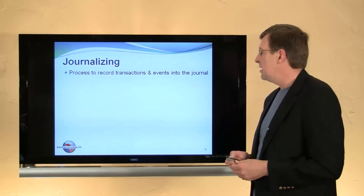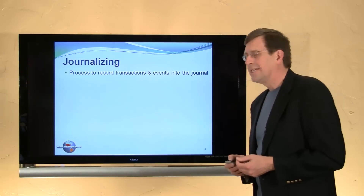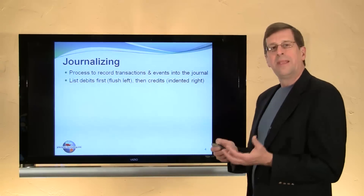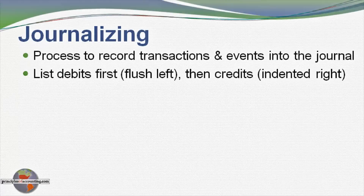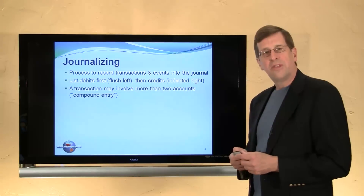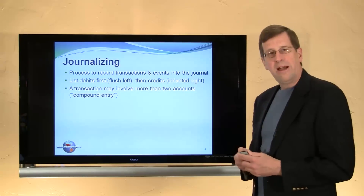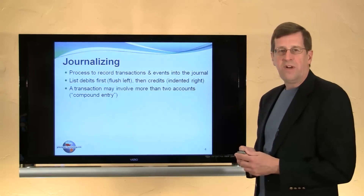The process of journalizing: we begin by looking at our transactions and events and think about what accounts are affected and whether they are debited or credited. It's typical to list debits justified left, and then the credit indented to the right slightly. Recognize also that a transaction might be a compound journal entry because multiple accounts — more than two — would be affected. We'll see that in our last example.